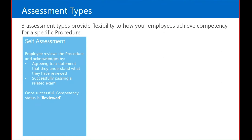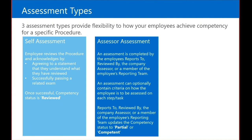The next option is an assessor assessment, completed by one of the three options we discussed: the Reports To individual (their manager), the Reviewed By (their supervisor), or a member of the reporting team (such as one of those leads). It could also be Jim, the company-wide assessor. In an assessor assessment, the employee does not do anything — the assessor comes and reviews the employee, deeming them either partial or competent.